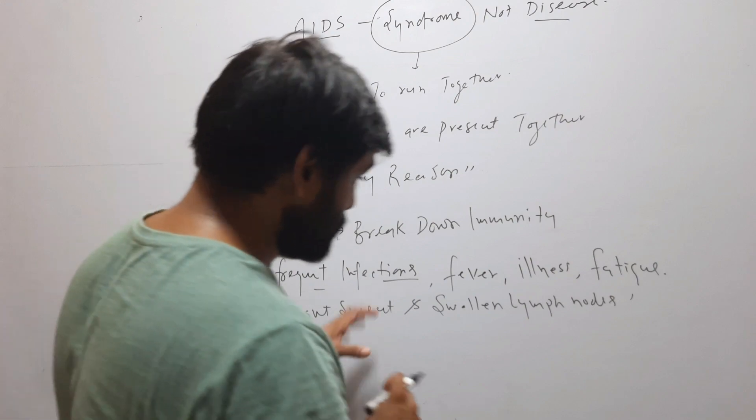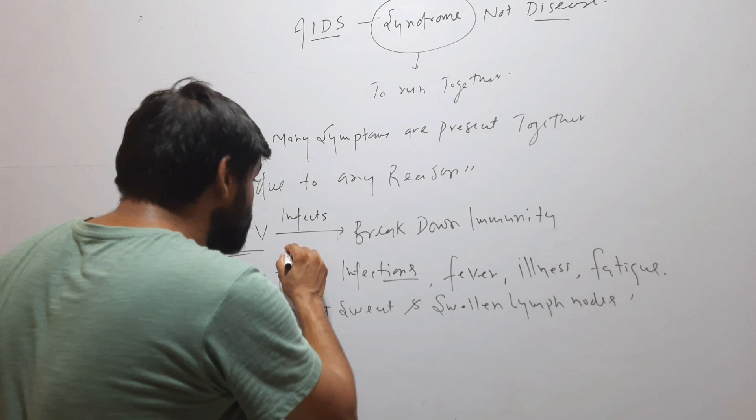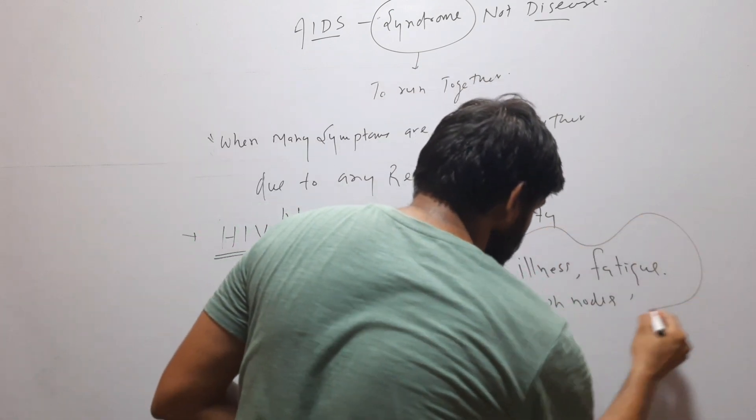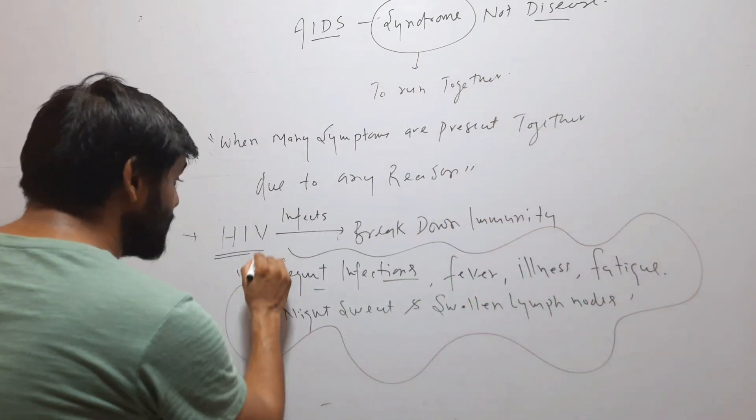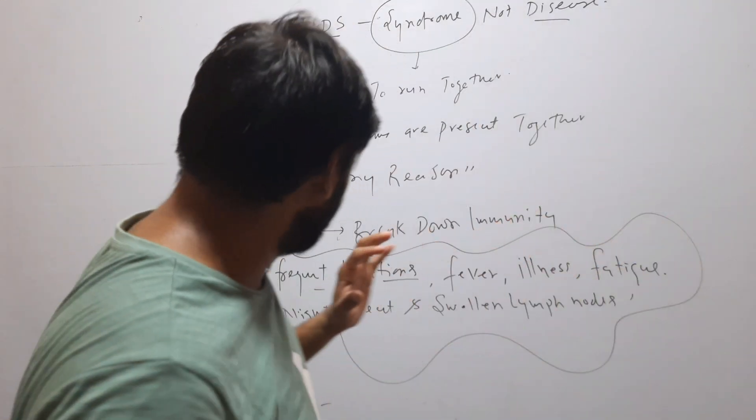So here you can see that there are many symptoms. So all these symptoms, all these symptoms are collectively called AIDS, acquired immunodeficiency syndrome.